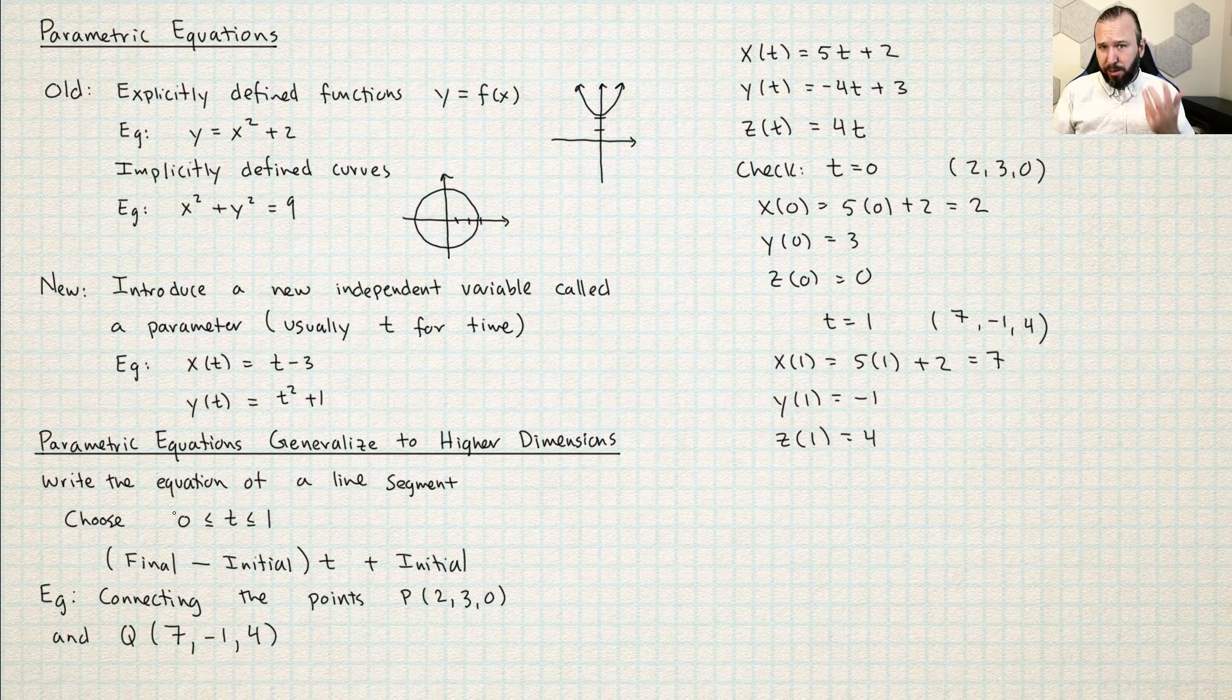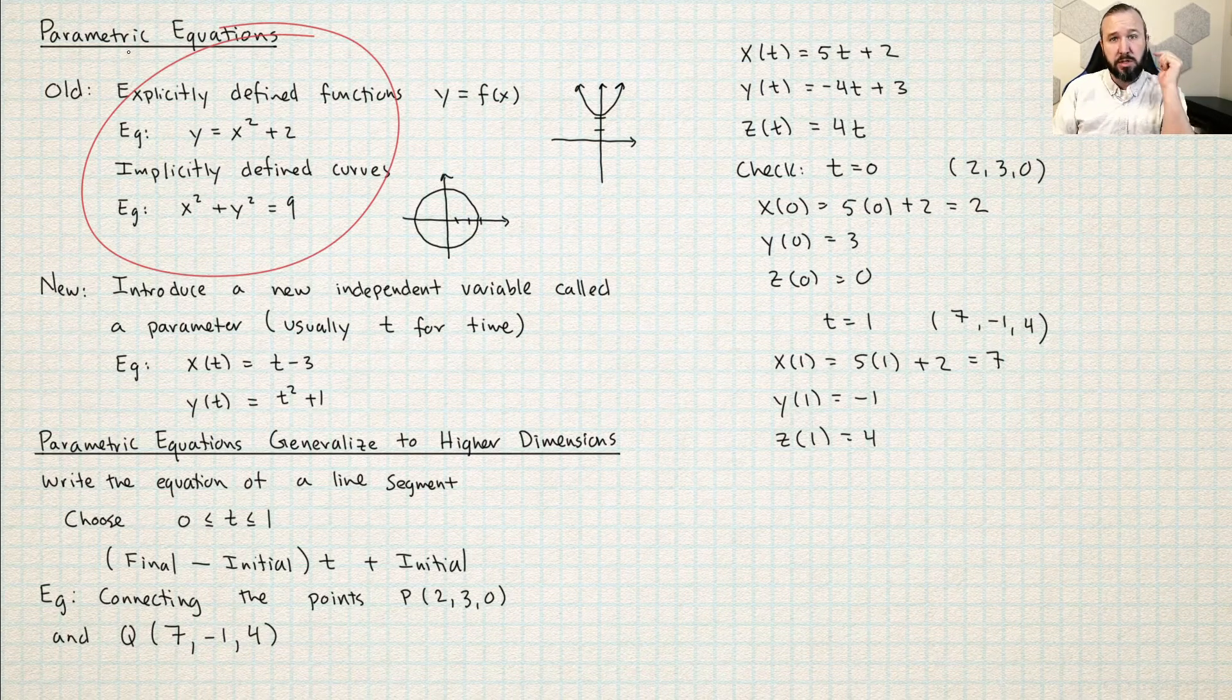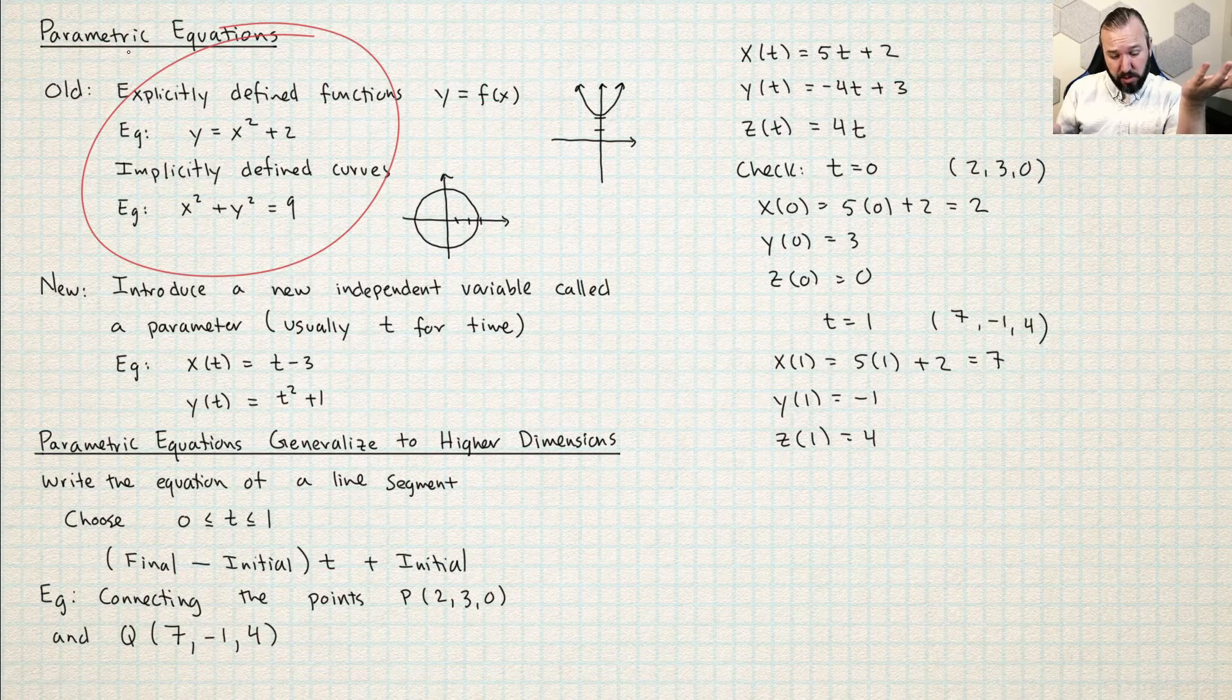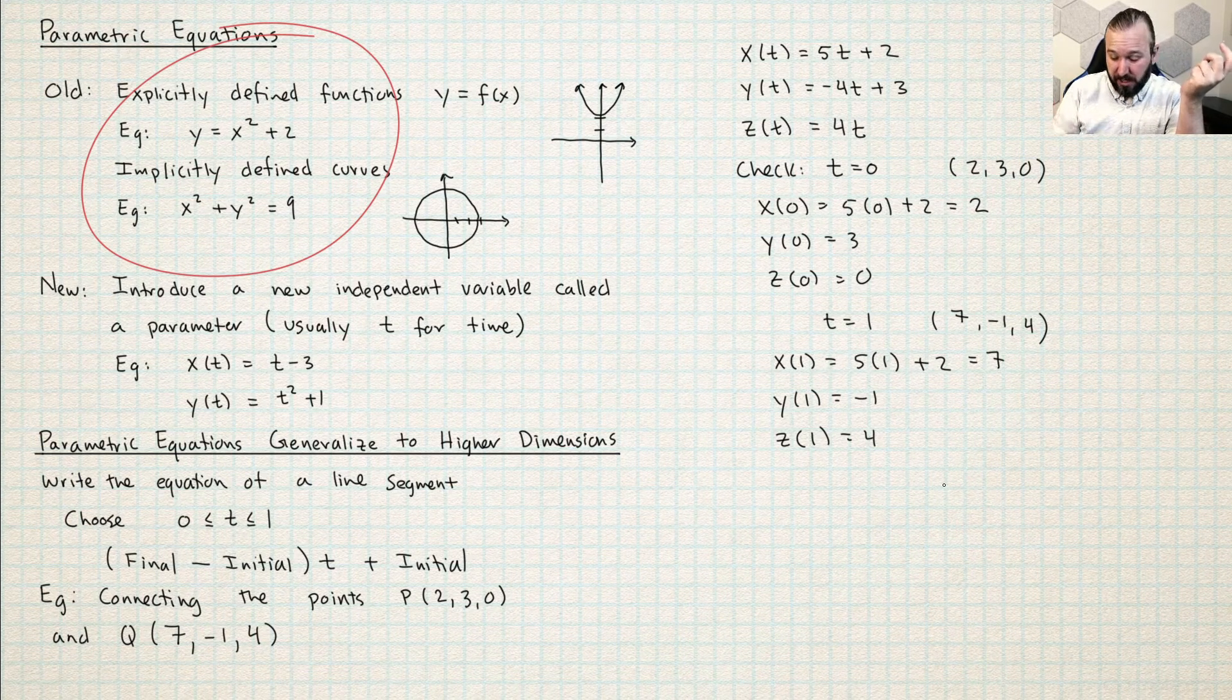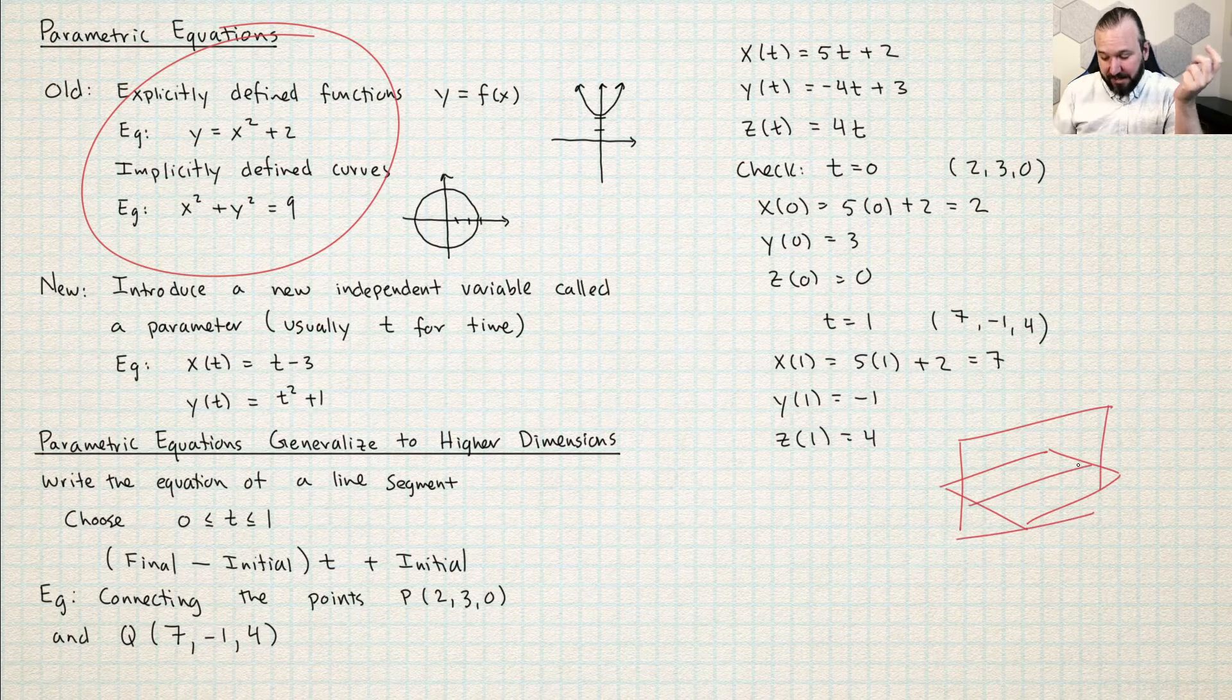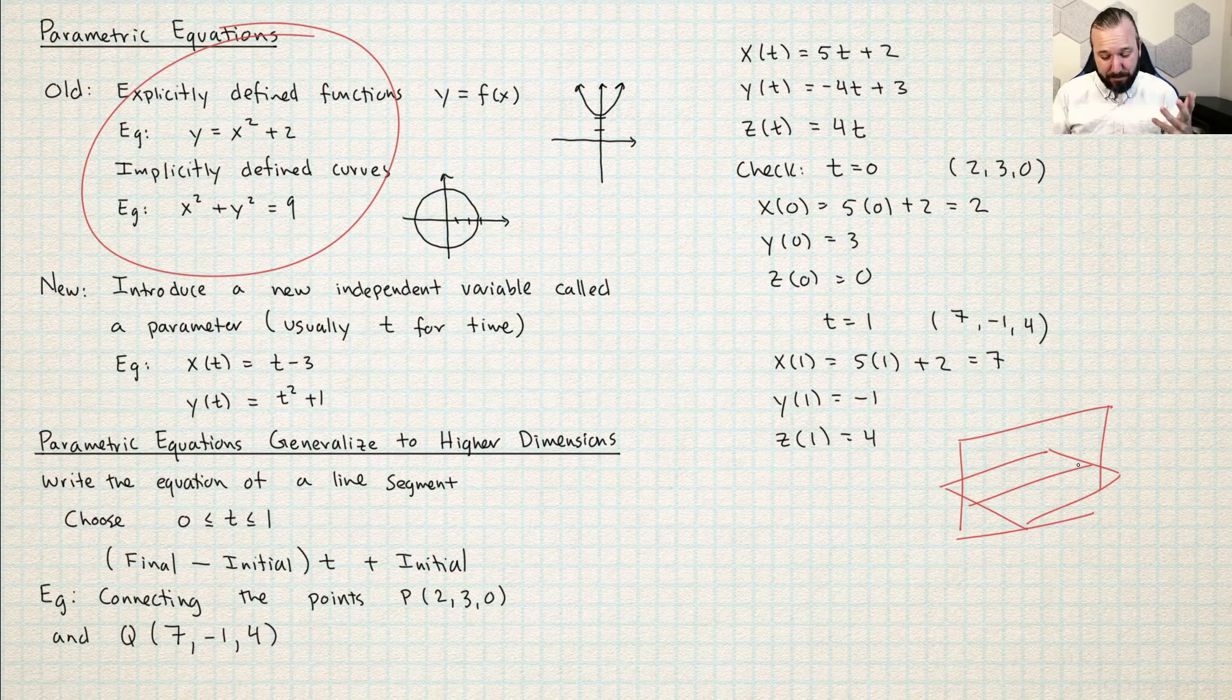I can tell you that in three dimensions, it is very cumbersome if you want to use this method to try to do something simple, like write the equation of a line. The only way that I can use implicit or explicitly defined functions to write the equation of a line in 3D is to view that line as the intersection of planes. And that is really just not a nice, happy thing to do.